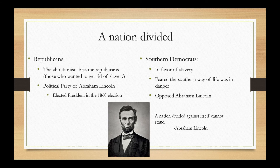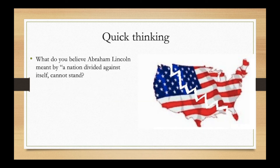Put it all together and you have a Civil War brewing. You have two groups — a nation divided. Republicans from the North were abolitionists; Abraham Lincoln fit this party and was elected president in 1860. Then you have Southern Democrats, who favored slavery, feared their way of life was in danger, and strongly opposed Lincoln. Lincoln made the famous statement: 'A nation divided cannot stand upon itself.' Think about what he meant by that.